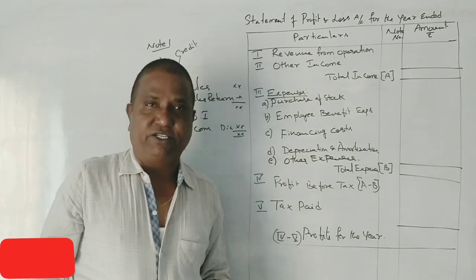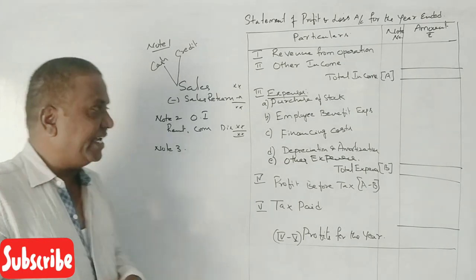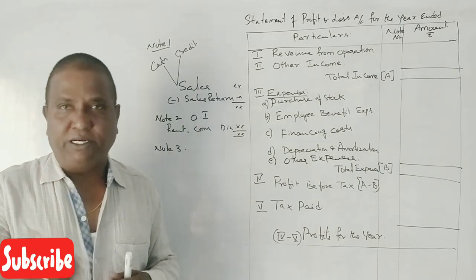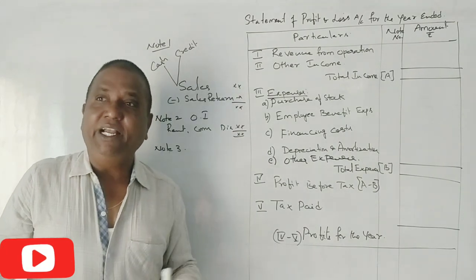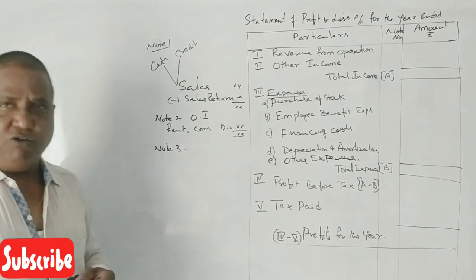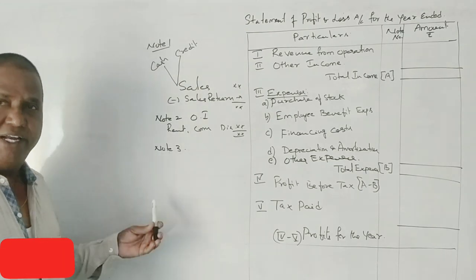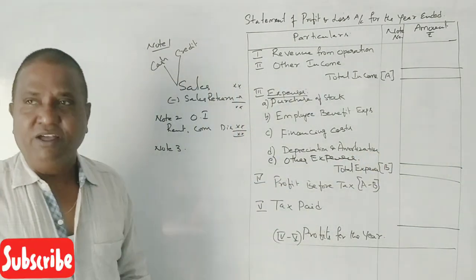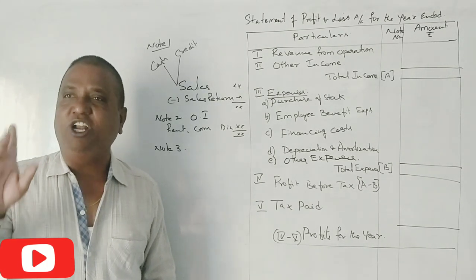Next: Finance Costs. Under one company, Finance Costs include Interest on Debentures and Interest on Bank Loans. That is the total of Note Number 5 — Finance Costs: Interest on Debentures and Interest on Loans.